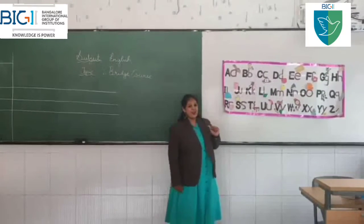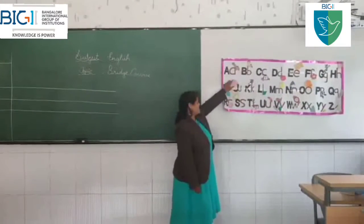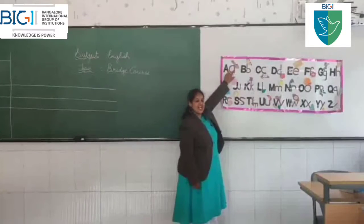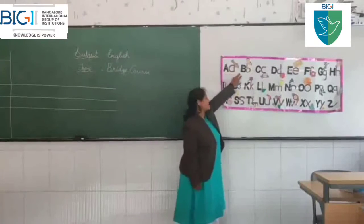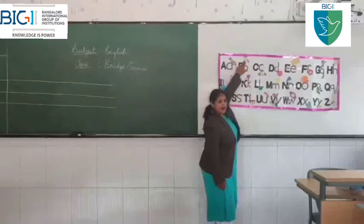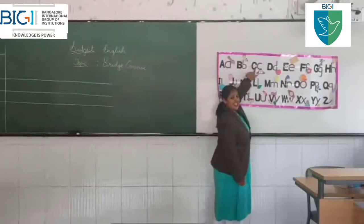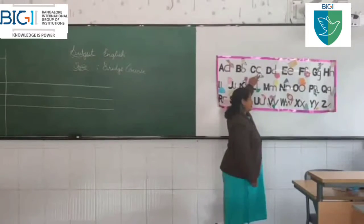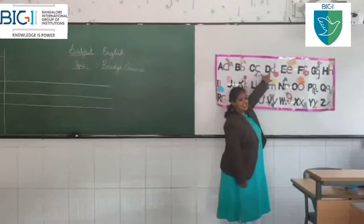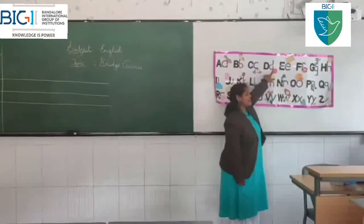Will you all sing along with me? Start. A is for ant, ah, ah, ant. B is for baby, ah, ah, baby. C is for car, k, k, k.